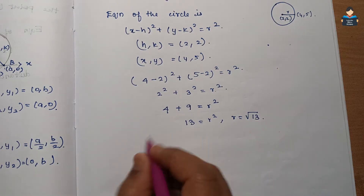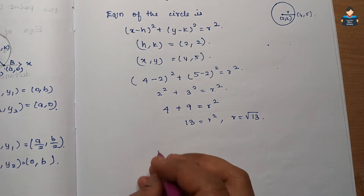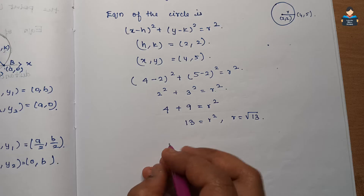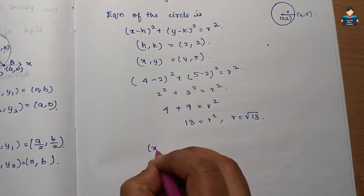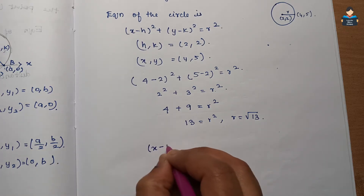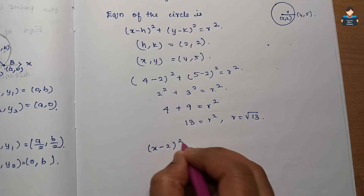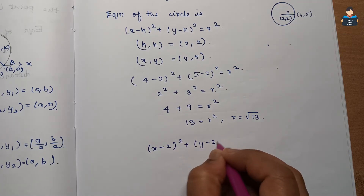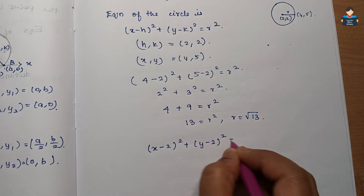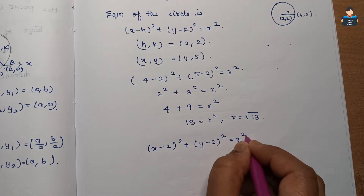So this will be the equation of the circle. First, substituting the center value into the equation of the circle: (x - 2)² + (y - 2)² = r².